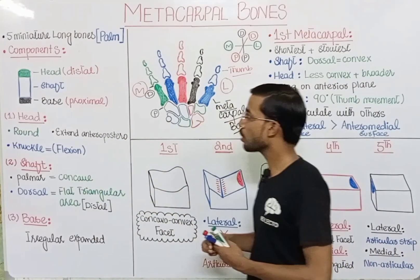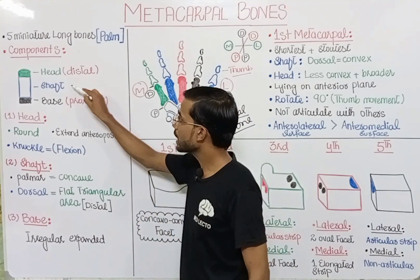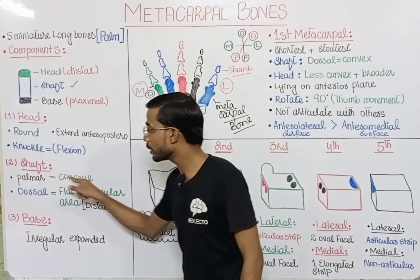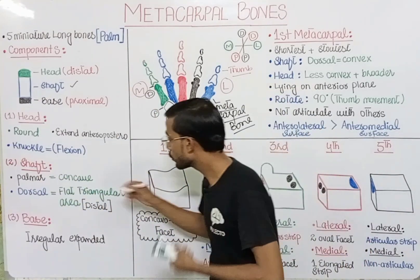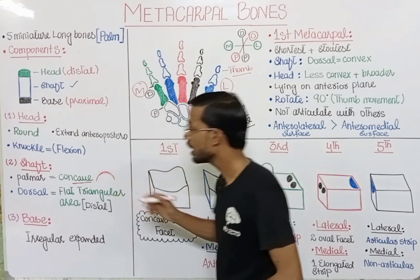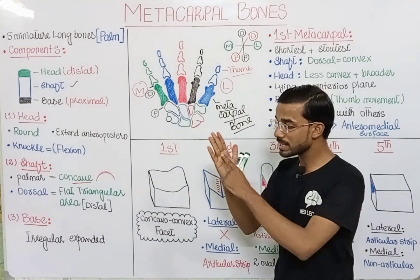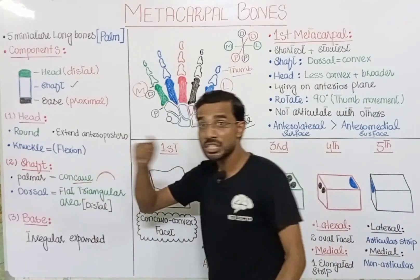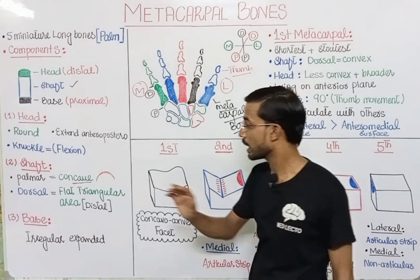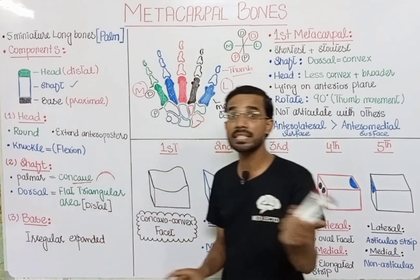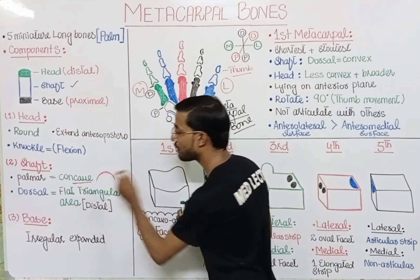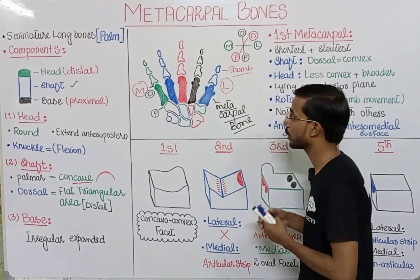The shaft region of the metacarpal is the second part. At the palmar side of the shaft, you will see a concave, cave-like structure. At the dorsal side, the shaft is convex. Except at the distal part, where you will see a flat triangular region.